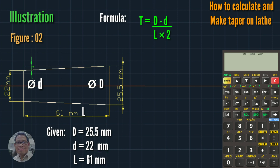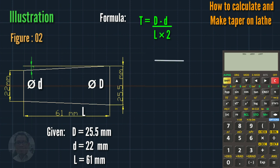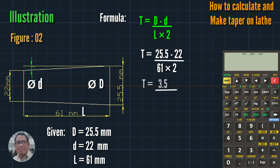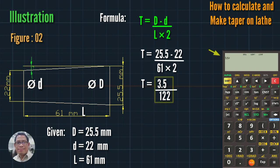So this is our formula. D minus d is 25.5 minus 22, which is 3.5 mm. Then 61 times 2 is 122. Then 3.5 divided by 122 equals 0.0286.